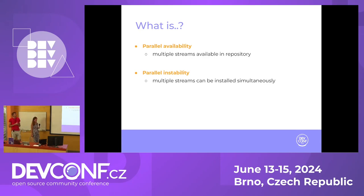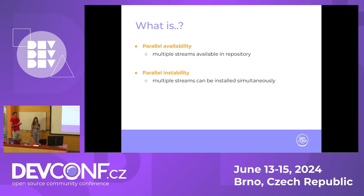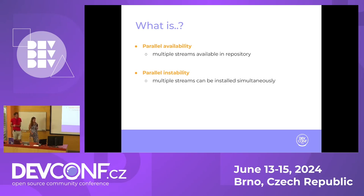Before we continue, we should clarify two terms. Parallel availability means that the package is in the Fedora repository in multiple versions. And parallel installability means that two same packages in different versions could be installed in parallel at the same time.